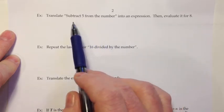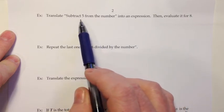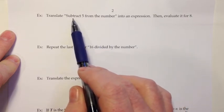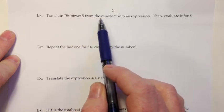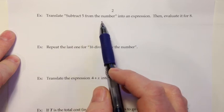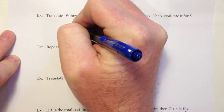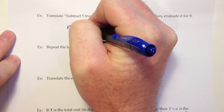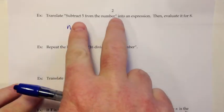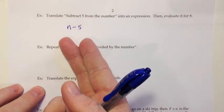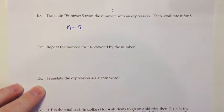At first, you might think this is going to be 5 minus n because you hear it's a subtraction problem. But when you are subtracting the 5 from the number, that implies that the number was there first, and then we subtracted 5 from that. So this is actually going to translate as the number with 5 subtracted away from that, so it'll be n minus 5. That's pretty common with subtraction, that they're telling you what to subtract first, and then what it's been subtracted from second, and that always causes a reversal between the way the words appeared and the way the symbols come up on the paper.